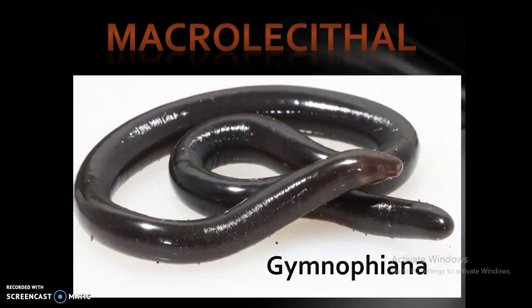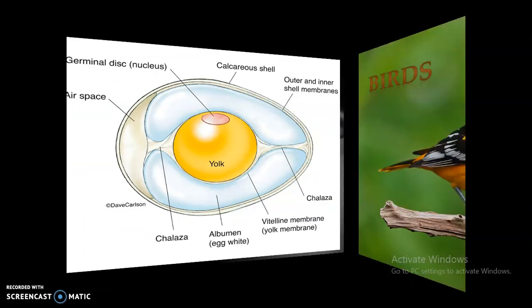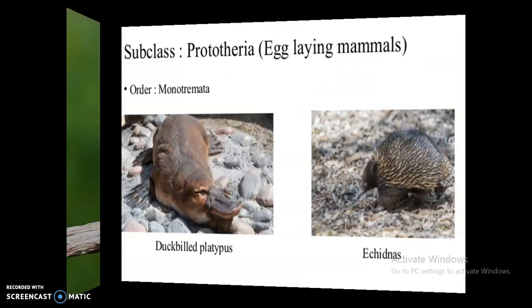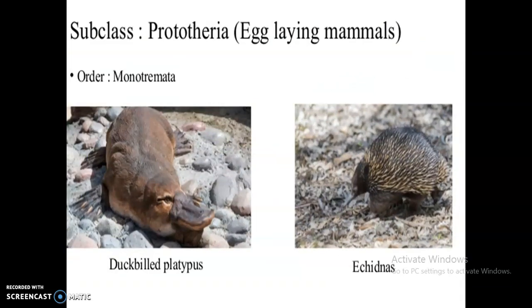The next category is macrolecithal eggs. The term tells us these are eggs with a large amount of yolk, also known as megalecithal or polylecithal. In these eggs, the yolk occupies almost the entire interior part of the egg and the cytoplasm remains at the top. Examples include gymnophiona, birds' eggs, and prototherian eggs.